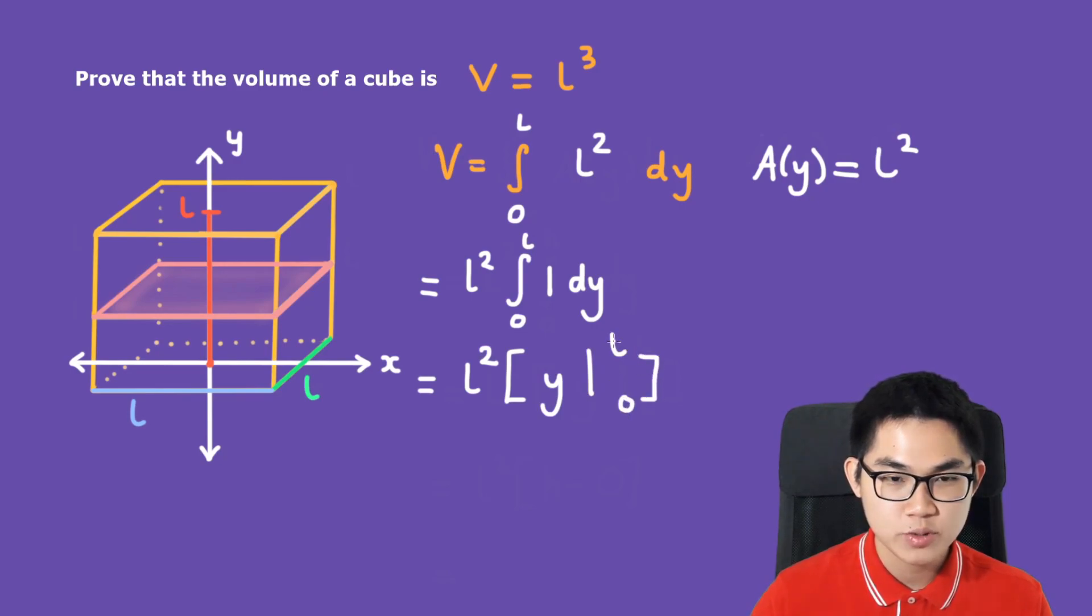Now, we substitute L and 0 into the Y. So we get L to the power of 2 times L minus 0. And so this will give you L to the power of 3. And that's it.